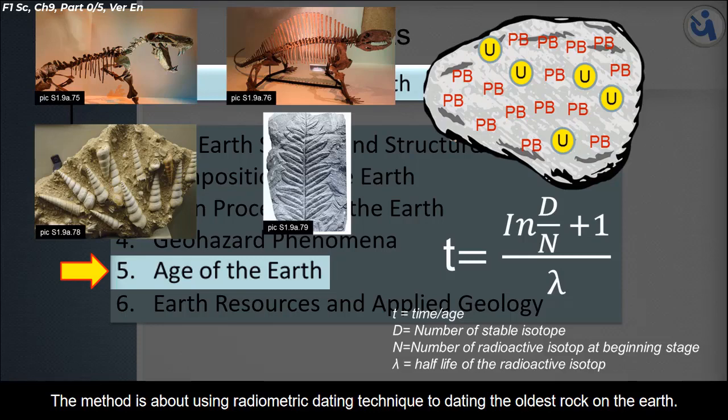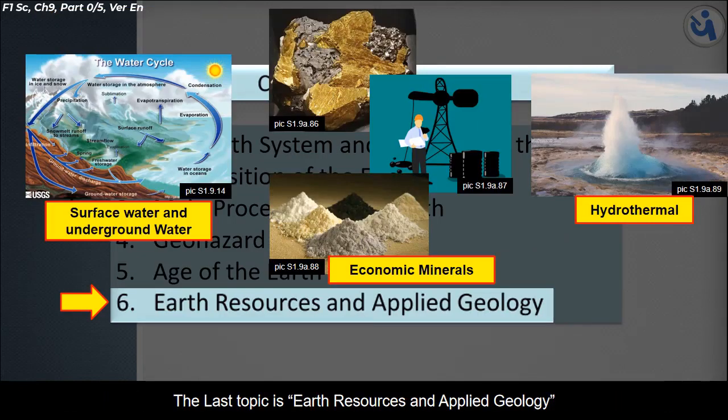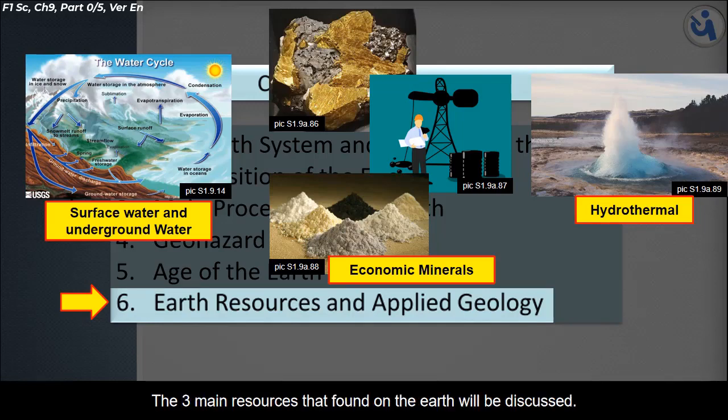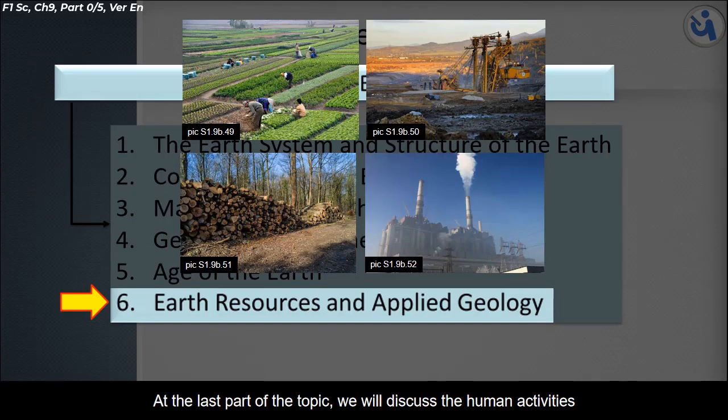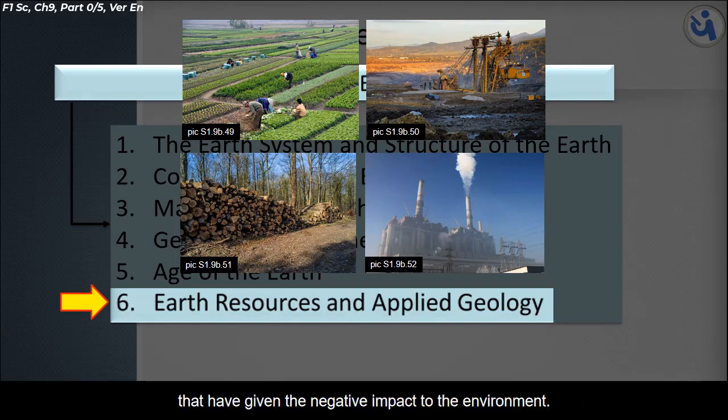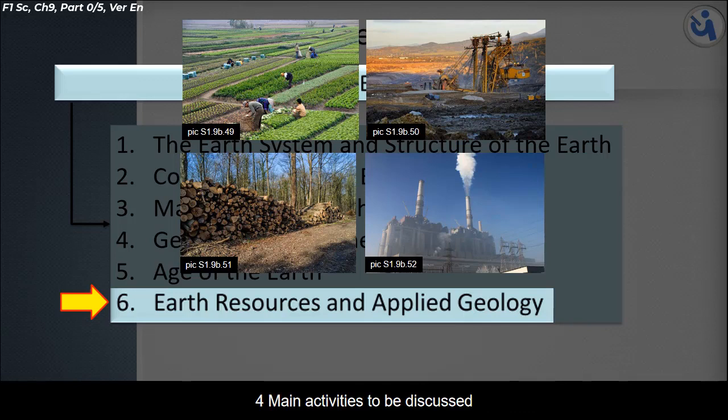The last topic is Earth resources and applied geology. The three main resources found on Earth are surface water and underground water, economic minerals, and hydrothermal resources. We will also discuss human activities that have negative impacts on the environment: agriculture, mining, logging, and industries.